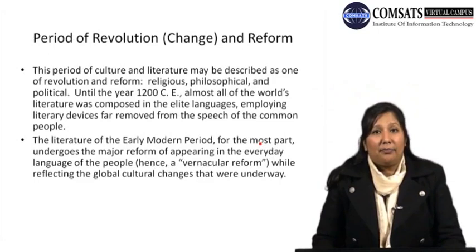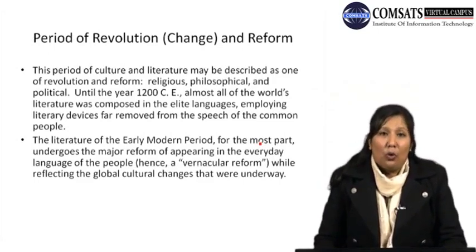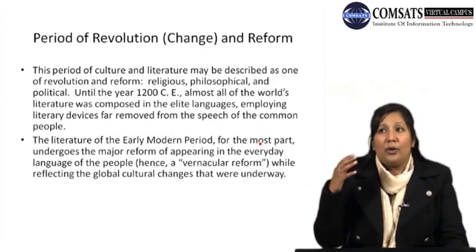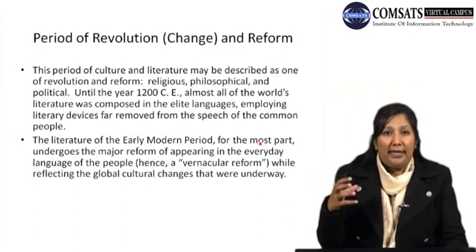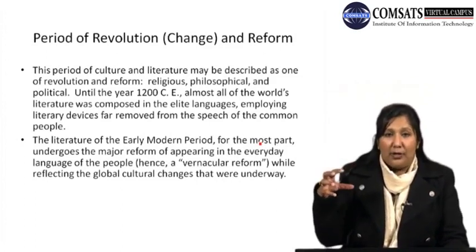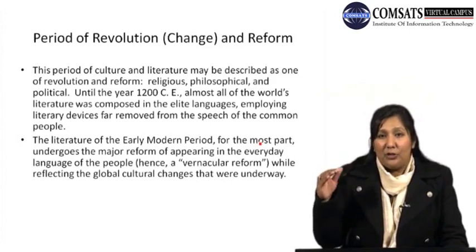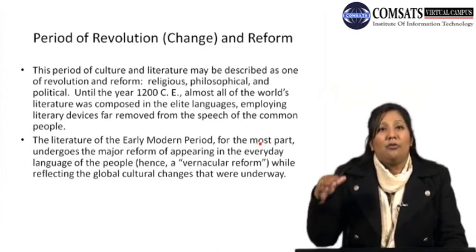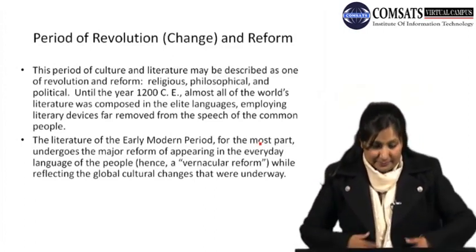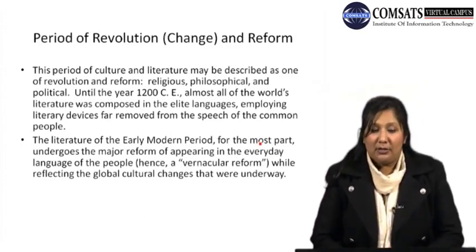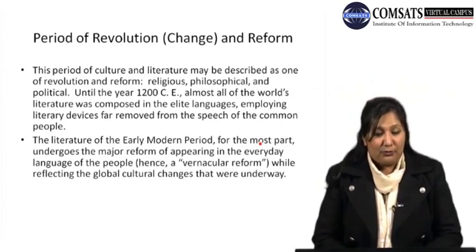The literature written in elite class language made use of all literary devices, which meant it used very difficult, sophisticated words. Naturally, it was not comprehensible to people from the lower class. The literature of the early modern period, for the most part, undergoes major reform by appearing in the everyday language of the people.